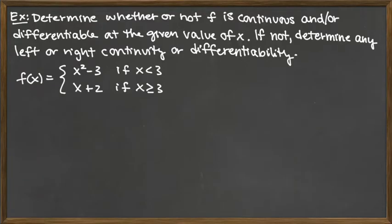In this problem, we're given a piecewise defined function. There are two pieces and the domain switchover is at x equals 3. For x less than 3, we have the polynomial x squared minus 3 — a parabola opening upward shifted down 3 units. For x greater than or equal to 3, we have the line x plus 2. We need to look at continuity and differentiability at x equals 3, which is that switchover place in the domain.